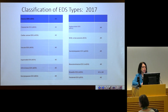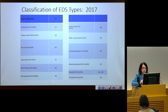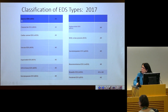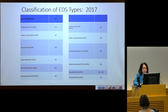I'm going to do a quick run-through. The classification of EDS types in 2017 included 13 types, starting with the classical Ehlers-Danlos Syndrome. The most common ones I'm going to emphasize today are the classical, vascular, and hypermobile types of Ehlers-Danlos Syndrome. The rest fall under the rare disorders category.